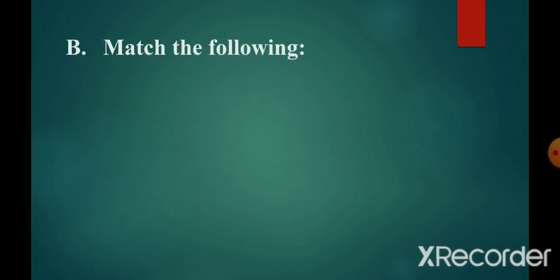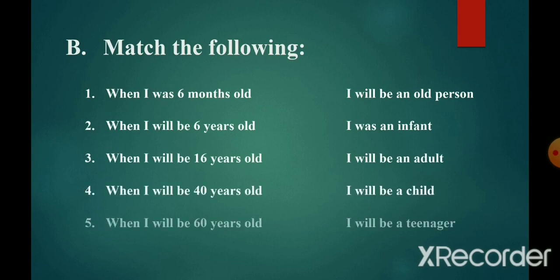Section B: Match the following. Number one: When I was six months old, the answer is I was an infant. Number two: When I will be six years old, the answer is I will be a child.